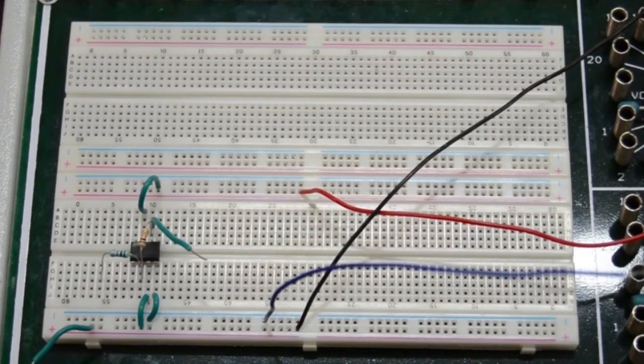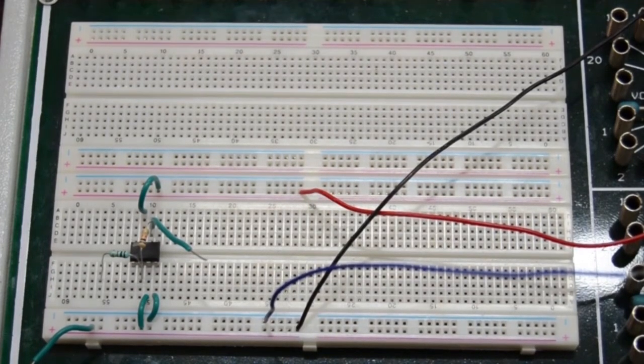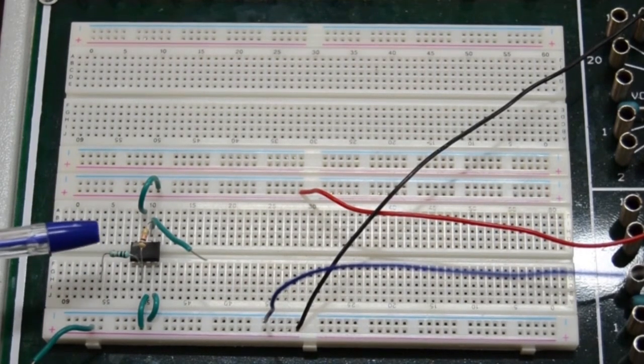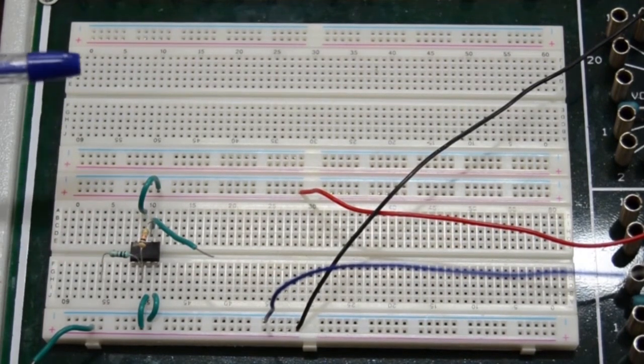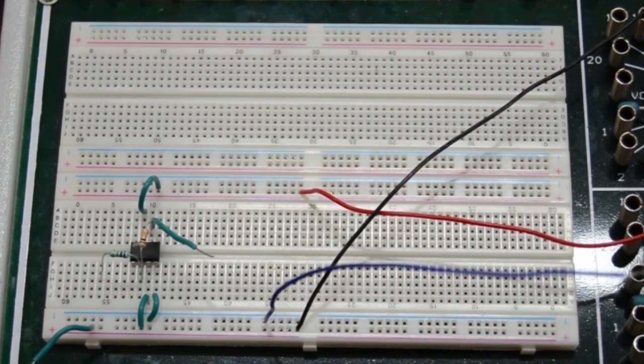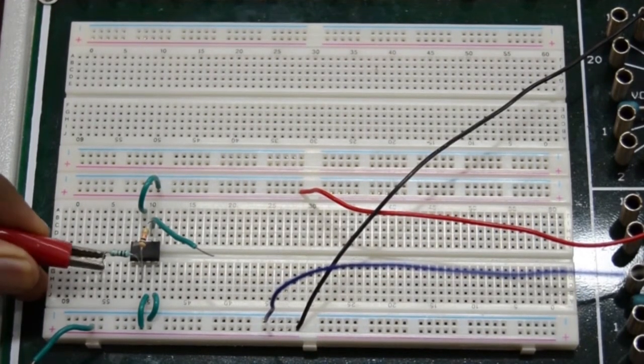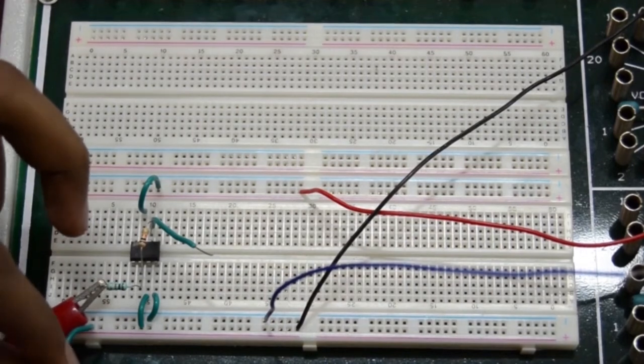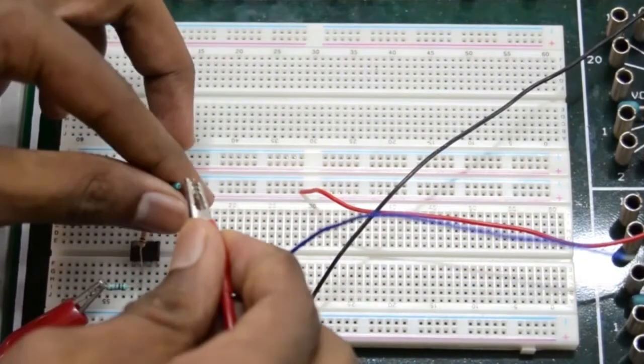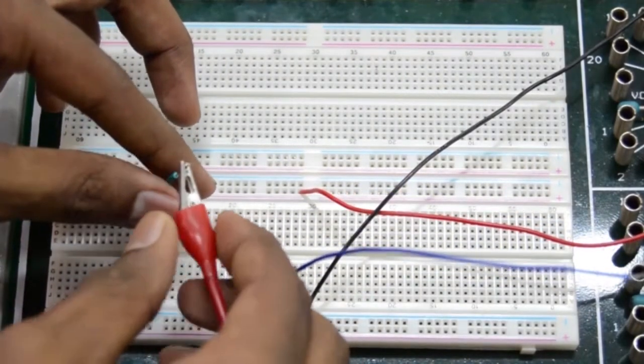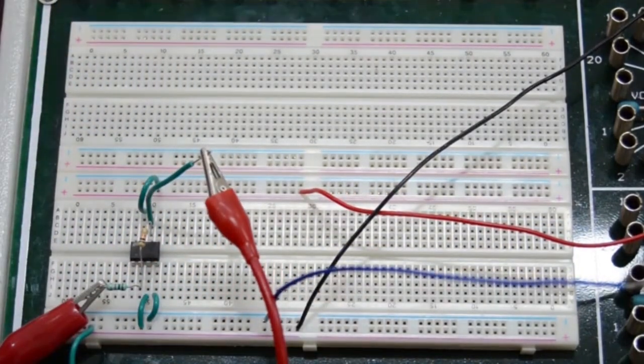Now we have assembled the inverting configuration on the breadboard. This is the IC MUA 741. This is the input resistance R1 which is 1k ohm. This is the feedback resistance Rf which is 10k ohm. The gain would obviously be 10 times. Now we will connect the input at terminal 2. The output is obtained from terminal 6.